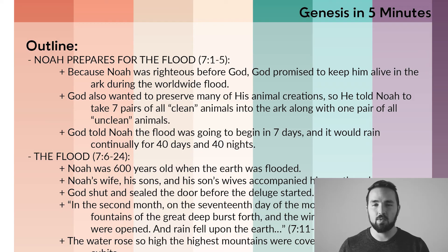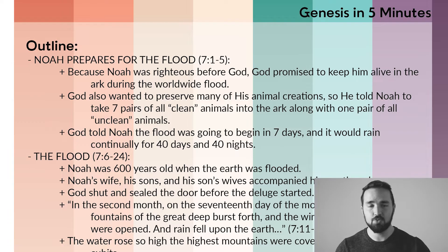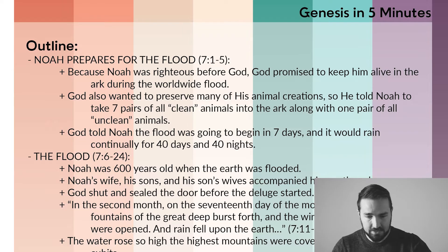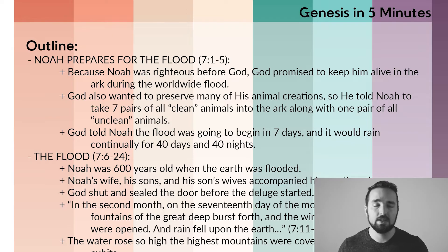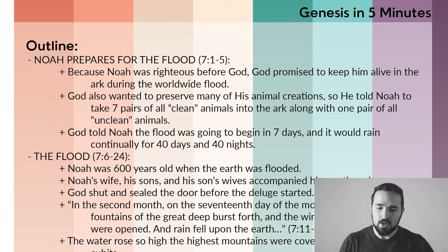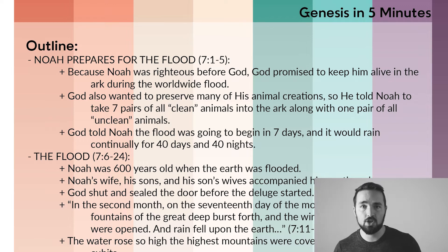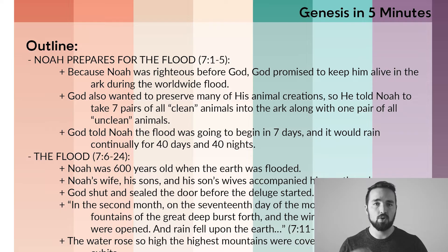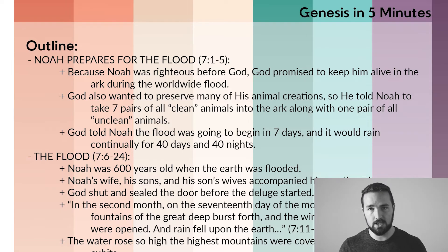Now let's talk about our outline and break this chapter down into nice sections. The first section, verses 1 through 5: Noah prepares for the flood. Because Noah was a righteous man, God promised to keep him alive during the flood in the ark that he was building, while everything else on earth was destroyed by the water. God also wanted to preserve some of the animal kingdom, so Noah was told, once he finished the ark, to take seven pairs of all clean animals into the ark, along with one pair of unclean animals.